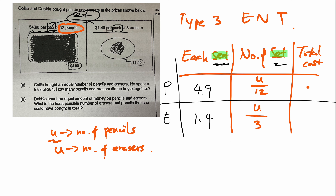Double-check: it's 14 over 30 U, which simplifies to 7 over 15 U. The question says they spent $84 total, so you add 49 over 120 U and 7 over 15 U to equal 84. Solve for U — once you find U you know the number of pencils and also the number of erasers. If they ask for the number of sets of pencils, just take U divided by 12. That's how you solve this question.